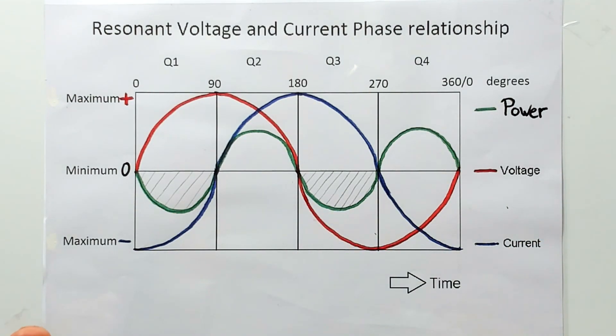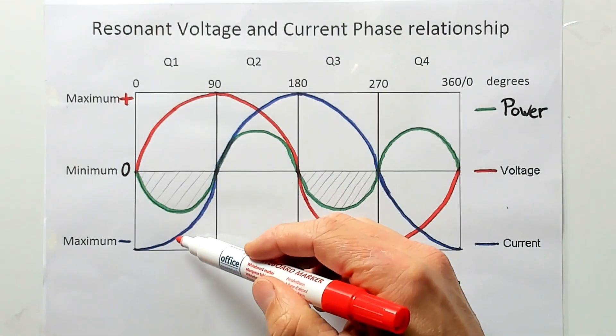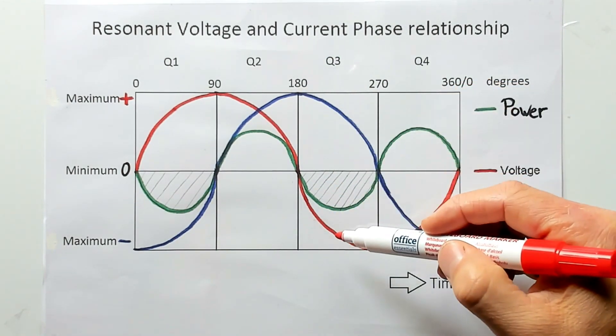And this power comes from the multiplication of the voltage and the current. Same here. Multiplication of the voltage and current.